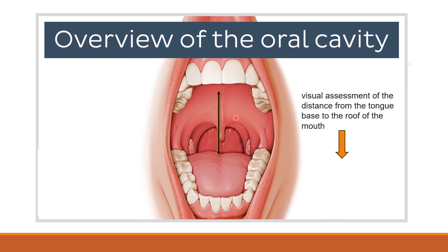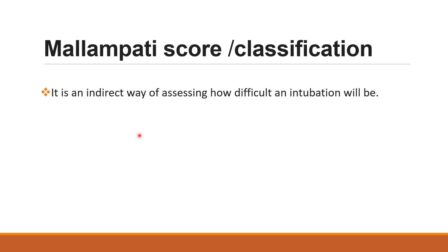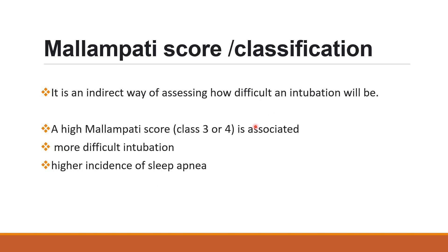The Mallampati score helps us know about the amount of space available to work with. If there is less space, more work has to be done, and if there is abundant space, less work has to be done. It is an indirect way of assessing how difficult an intubation will be. A higher score of class 3 or 4 is associated with more difficult intubation and a higher incidence of sleep apnea.